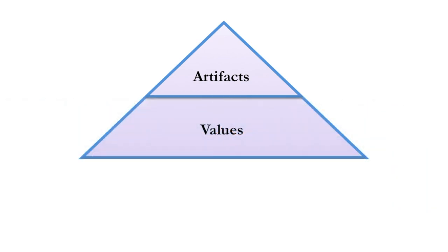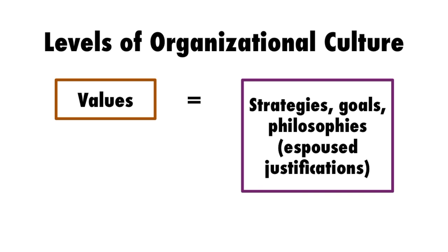Underneath the artifacts rest values — the strategies, goals, and philosophies of a culture, the espoused justifications. These are the reasons we're doing things, why we're driven in a certain direction to choose certain artifacts. For instance, if you have an assembly line or chain-of-command hierarchy as an artifact, beneath that is a set of values that drove those decisions — maybe efficiency is a primary value, or a belief that there's only one right way to do things. Those kinds of values, by the way, come out of the classical management era, especially Frederick Taylor, and have shaped many organizations.